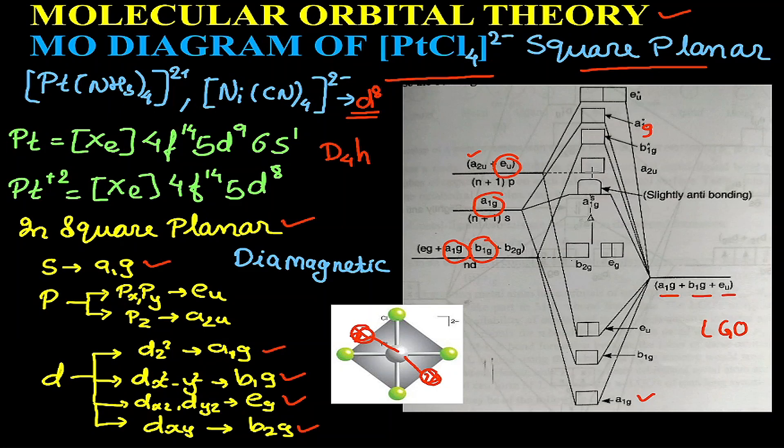The remaining a2u will be in non-bonding state. b2g and eg are in the non-bonding state. These are the non-bonding orbitals, so we have a total of three non-bonding orbitals.